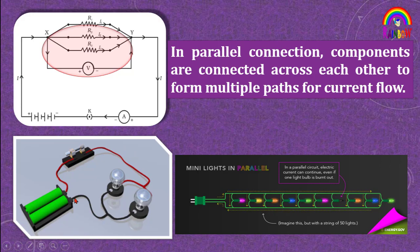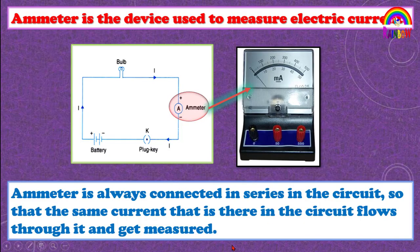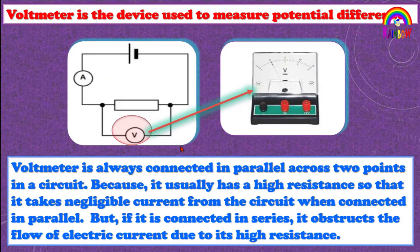Friends, you have to keep in mind that an ammeter should always be connected in series in any electric circuit so that the same current that is there in the circuit flows through it and gets measured. And a voltmeter should always be connected in parallel across the point between which the potential difference is to be measured. Voltmeter has high resistance and so it may obstruct the flow of current if connected in series.